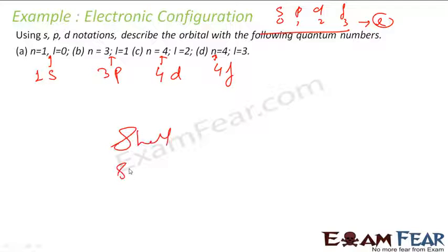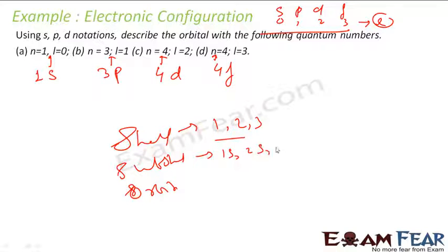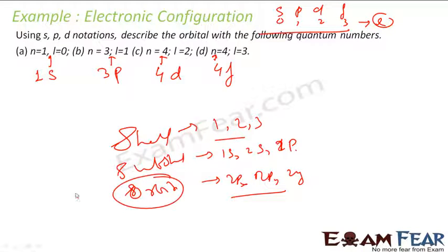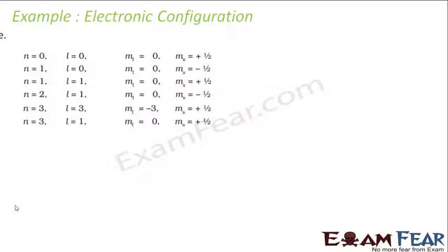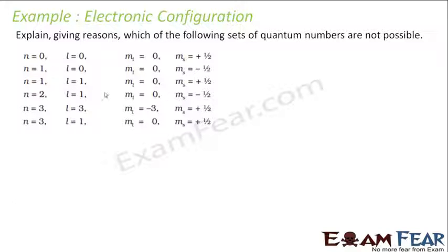To understand the structure: you have shells (1, 2, 3, ...), then subshells (1s, 2s, 2p, ...), and then orbitals (2px, 2py, 2pz, ...). Each orbital will have 2 electrons. Each subshell will have 2l+1 orbitals, and each shell will have n² orbitals and 2n² electrons.